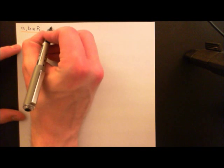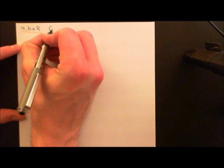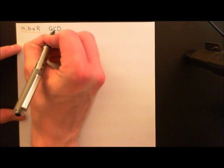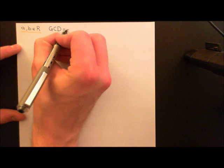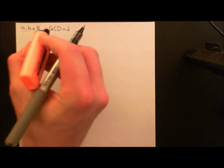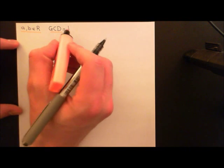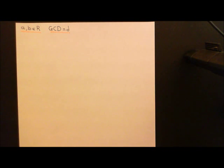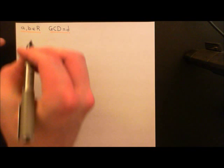Let's say that we now do have a greatest common divisor — I'll abbreviate this to GCD — and let's call it little d. So little d is going to be a greatest common divisor of A and B. What does that actually mean? Well, firstly, a greatest common divisor must actually be a common divisor of A and B.